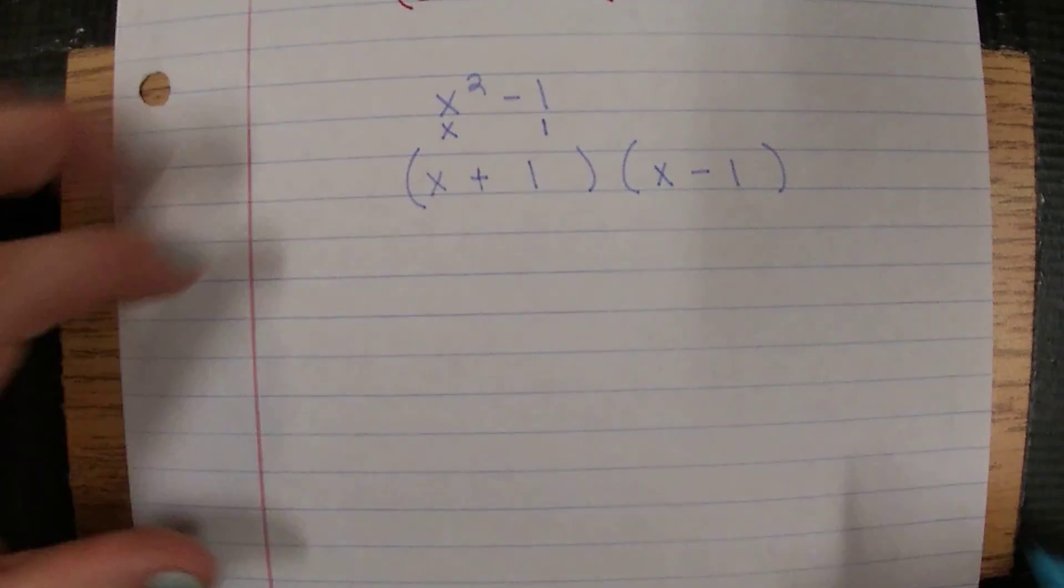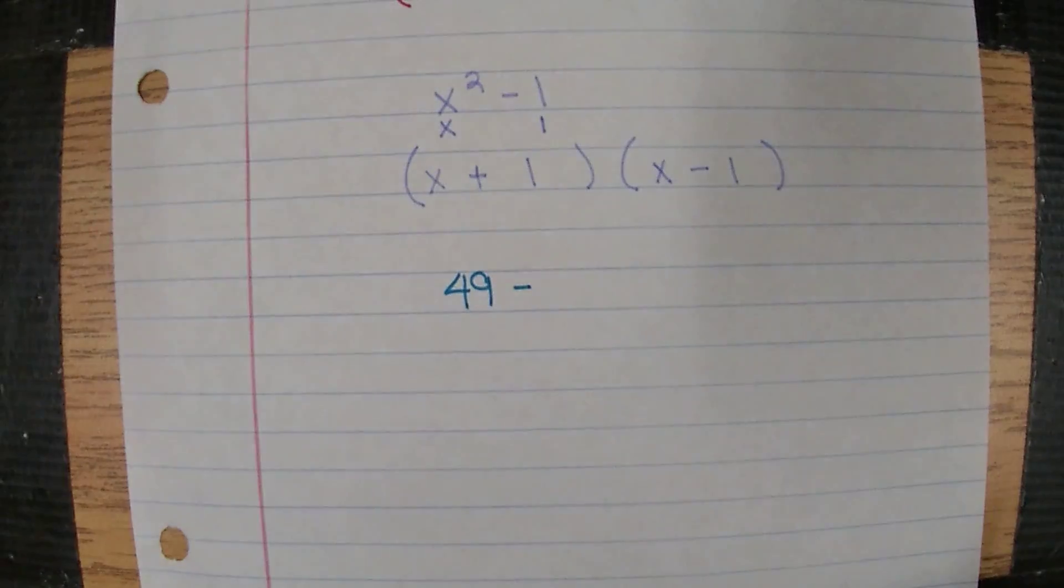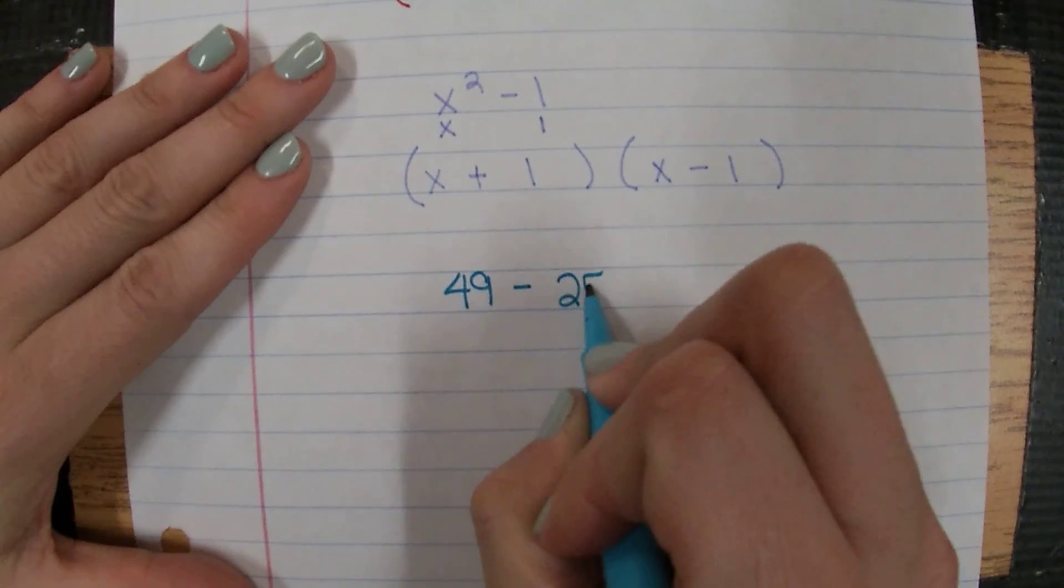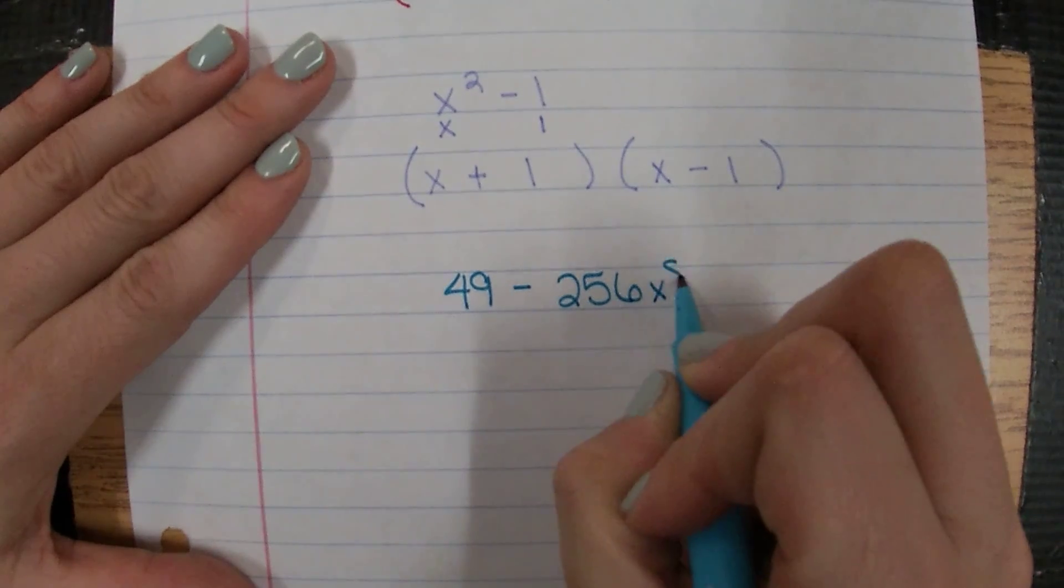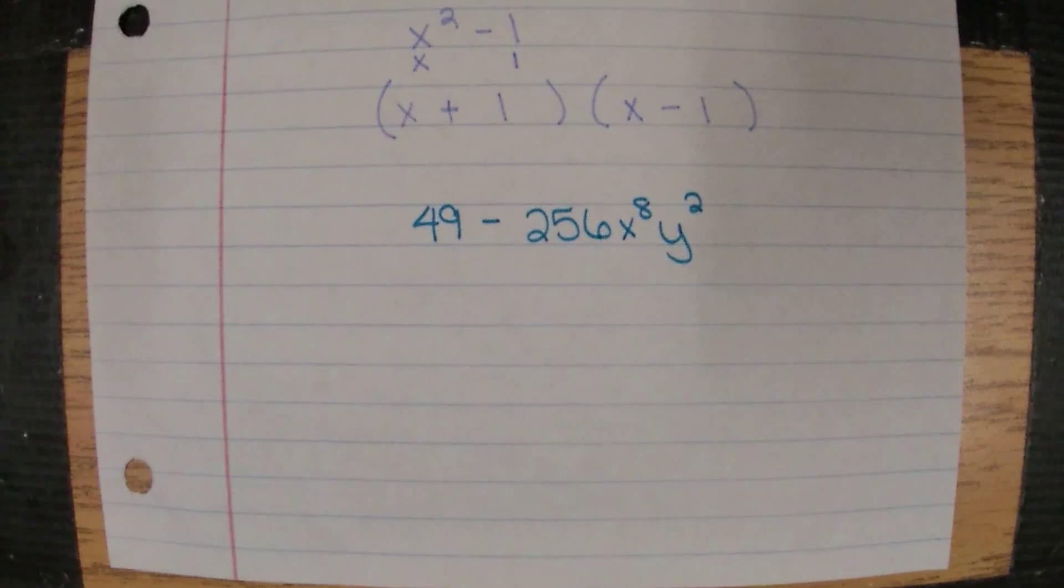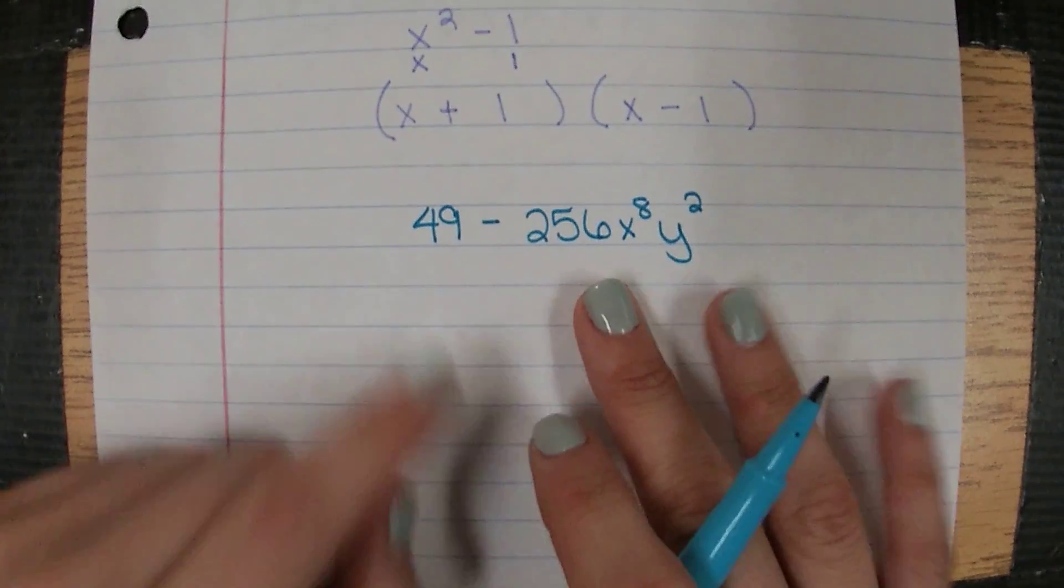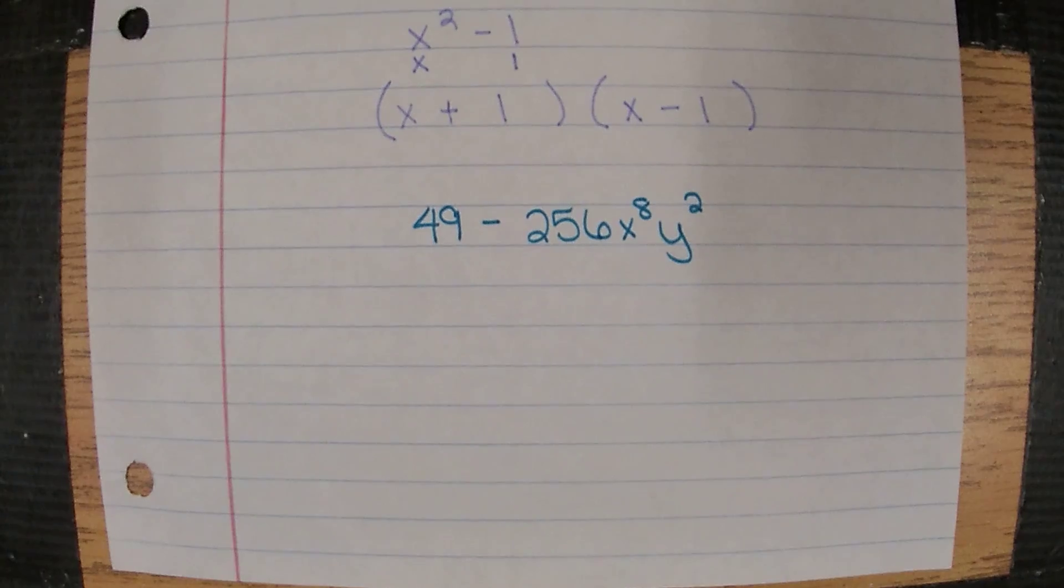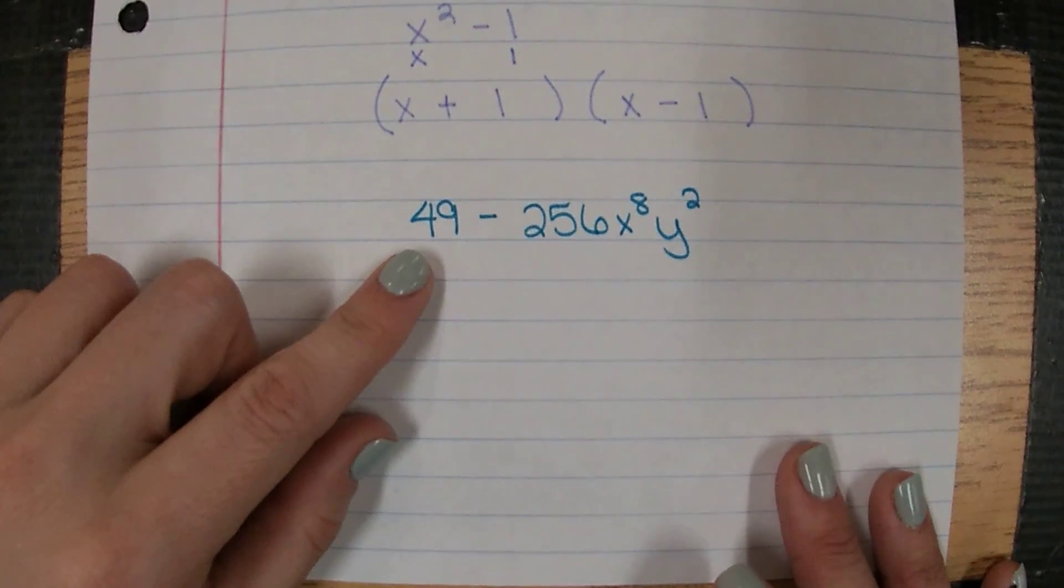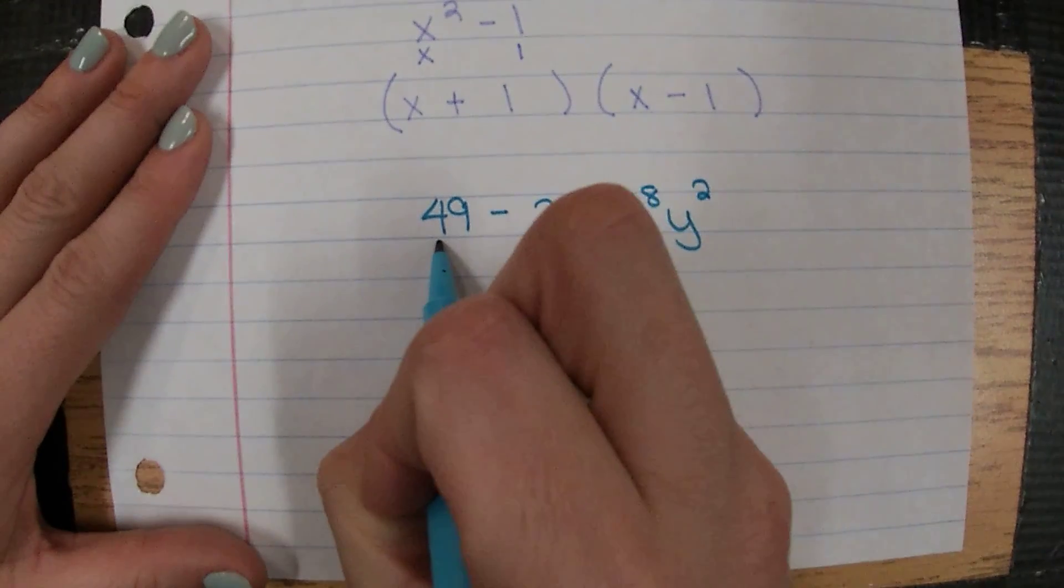Let's look at one that's maybe a little bit more complicated. We have 49 minus 256x to the eighth y squared. It looks more complicated, but it's not. Looks more complicated but it's no more difficult to factor. We're going to check our rules. Is it two terms? Yep. Is it subtraction? Yep. Are they perfect squares? A number times itself that gives us 49 is 7.